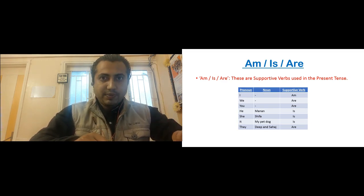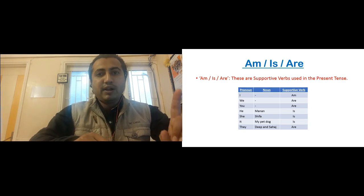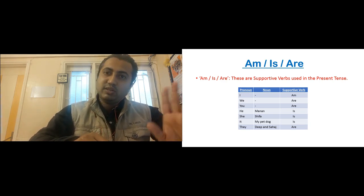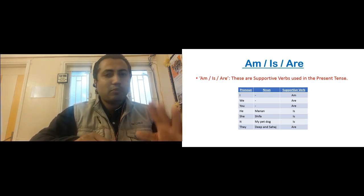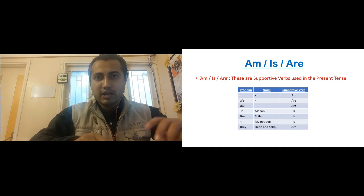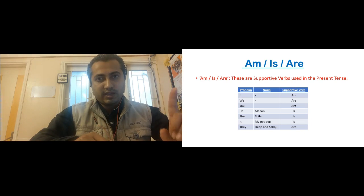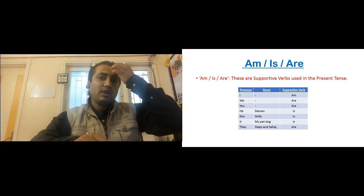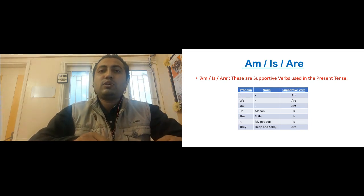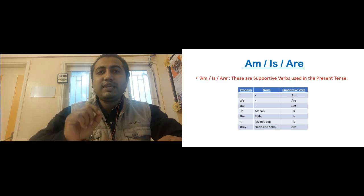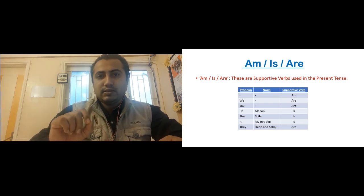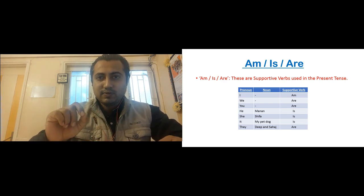Then if it is he, or if it is name of one boy. For example, I have taken here Manan. If it is he, or one boy's name, or one person, one man's name, for example Manan, the supportive verb we will be using is is. He is. Manan is.